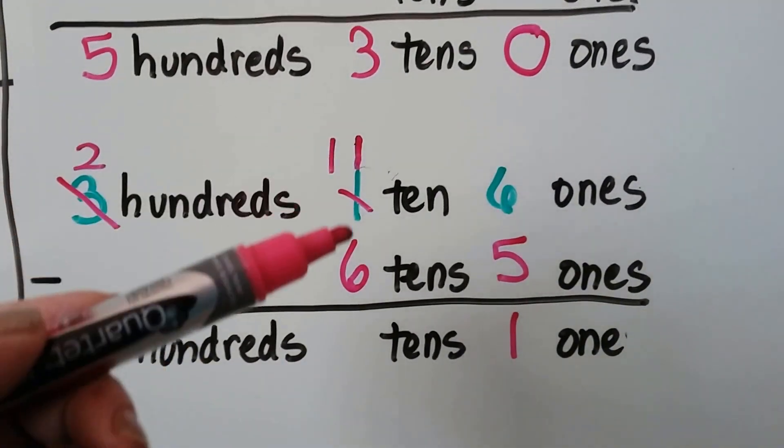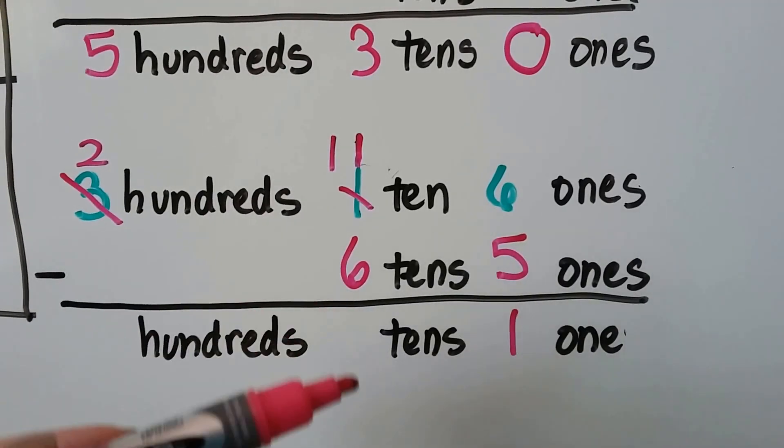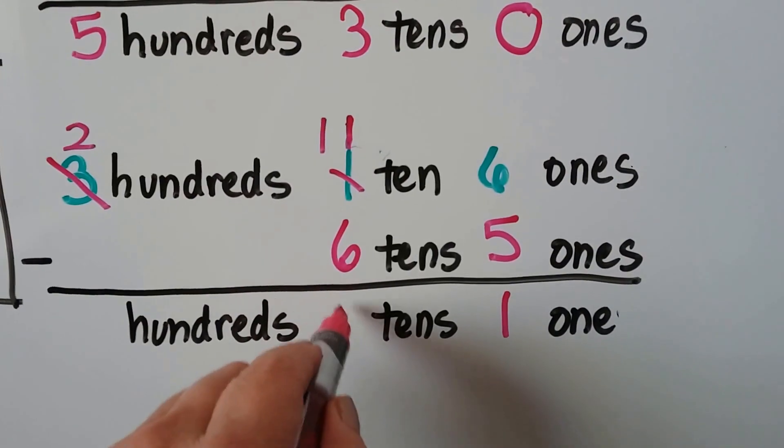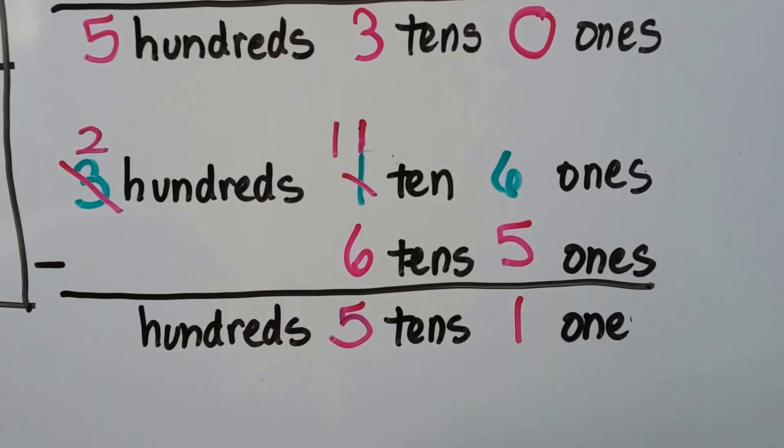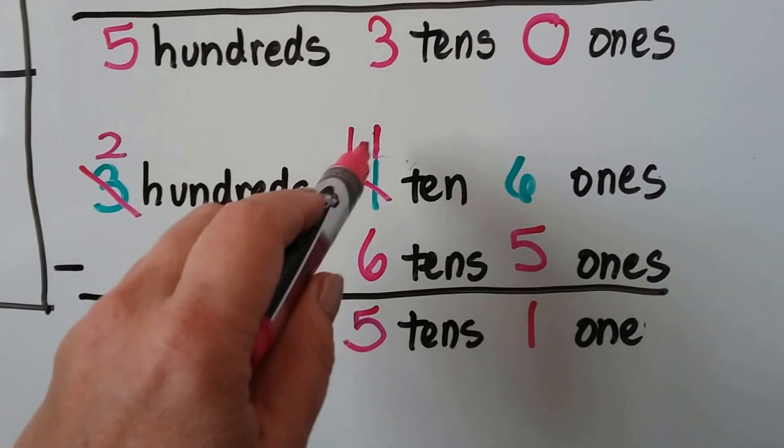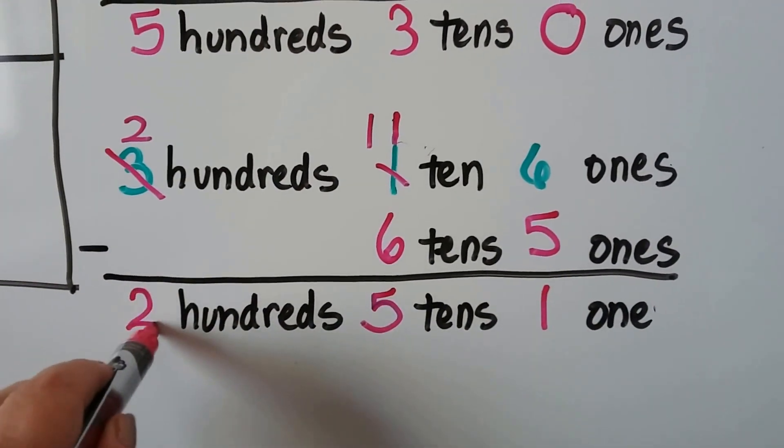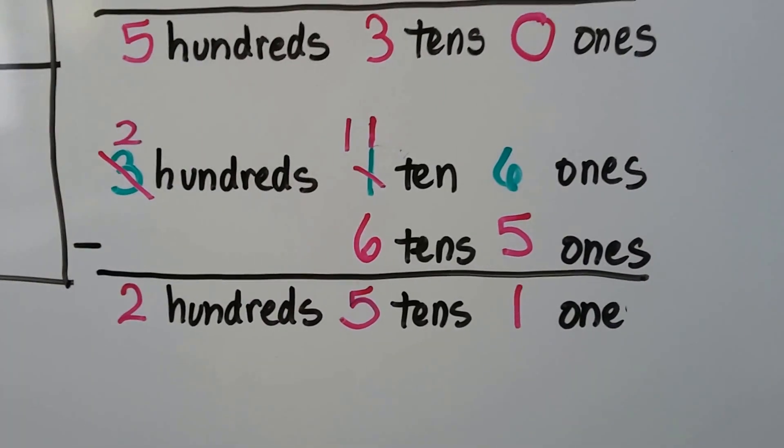Now we have 11 tens take away 6 tens. That's 11, 10, 9, 8, 7, 6. That's a 5. And 5 plus 6 is 11, isn't it? So that worked out right. And then we just dropped down our hundreds. So we had to regroup.